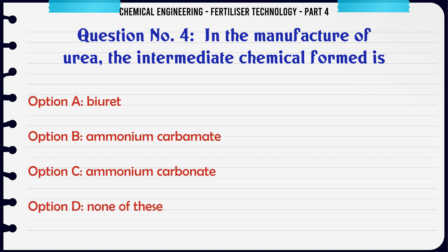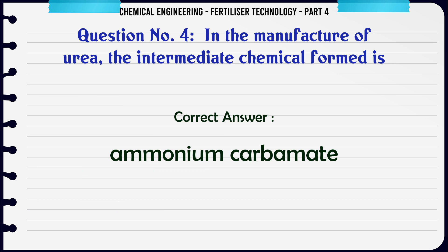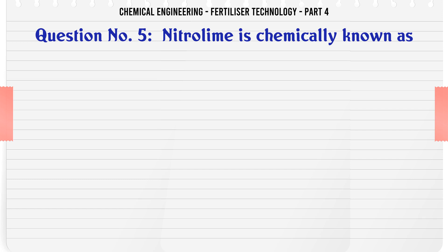In the manufacture of urea, the intermediate chemical formed is: a. biuret, b. ammonium carbamate, c. ammonium carbonate, d. none of these. The correct answer is: ammonium carbamate.